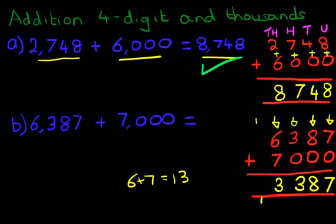And lastly, this column over here, the ten thousands. We don't have any here. We don't have any here, but we do have the 1 over here.